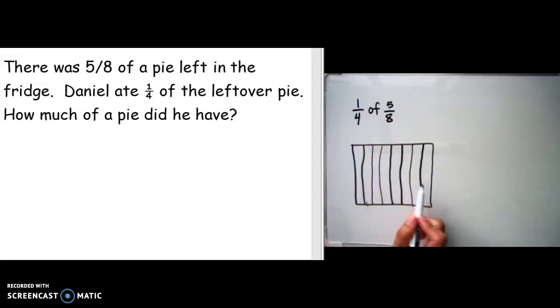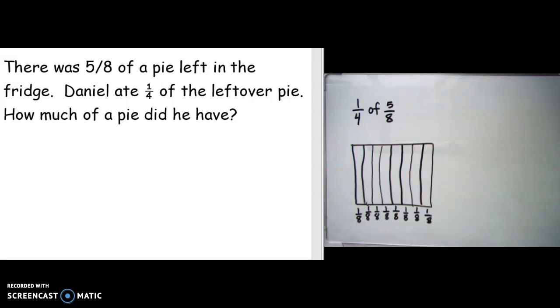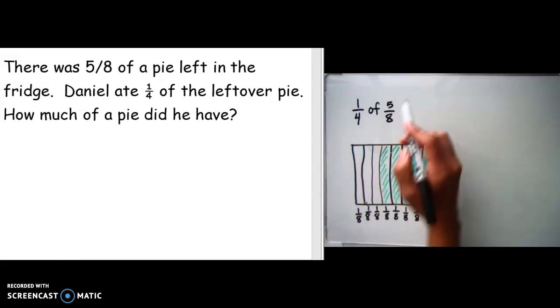So I have eight parts. Each one of these parts is one-eighth, one-eighth, one-eighth, and so forth. If I add these all together that would equal eight over eight, which is one whole. So we have one whole here and there was five-eighths of the pie left, so I am going to shade in five-eighths: one, two, three, four, and five.